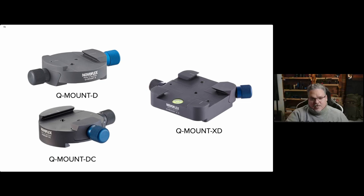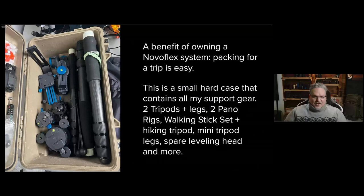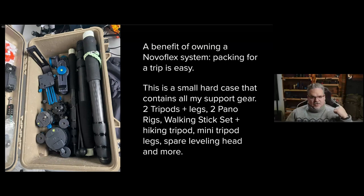There are additional accessories: the Q-Mount D clamp clamps in the same direction, the Q-Mount DC clamps in the opposite direction, and the Q-Mount XD clamps in either direction. These help avoid having to use AI to fill in the nadir gap. A benefit of the Novaflex system is that everything takes apart — I can fit two tripods, pano rigs, a walking stick, hiking tripod, mini tripod legs, and spare leveling head all in one small Pelican case.